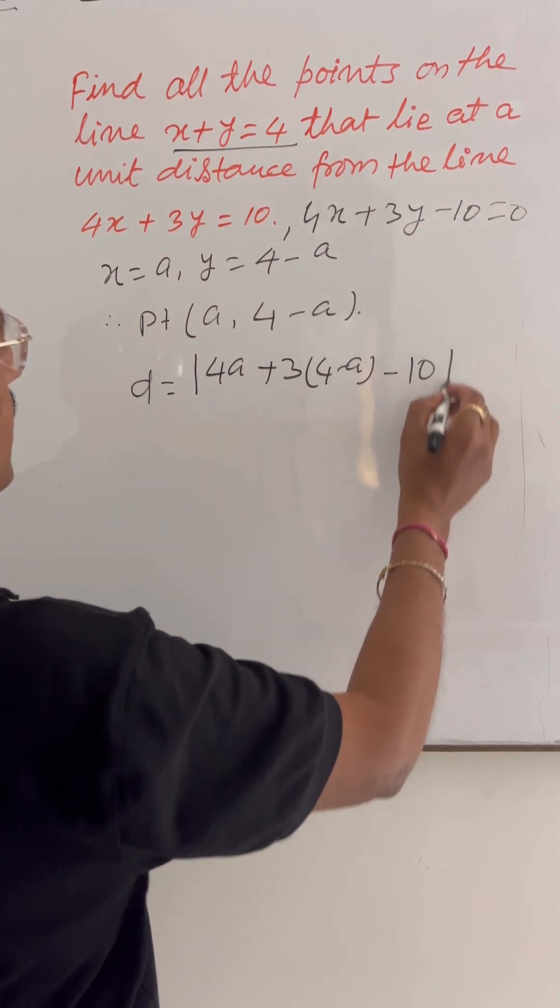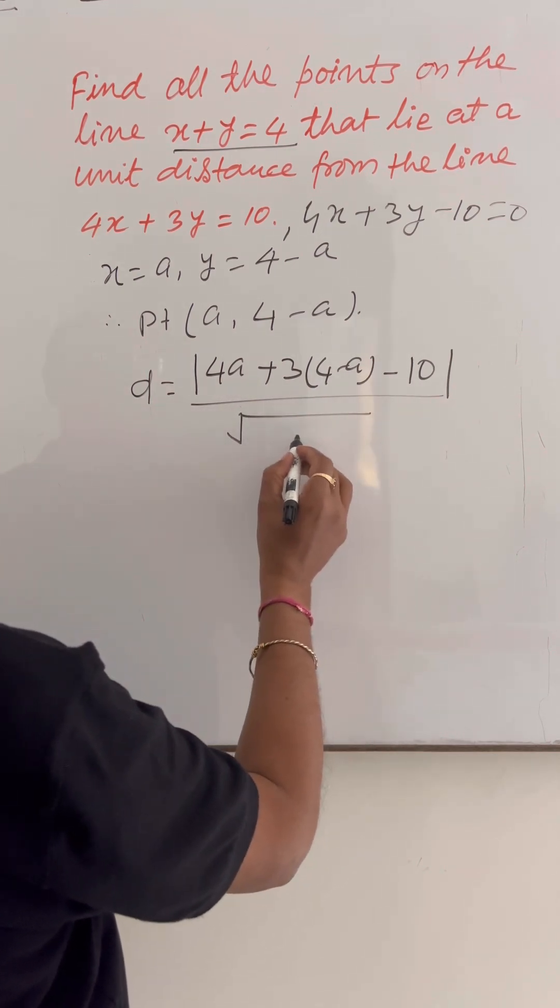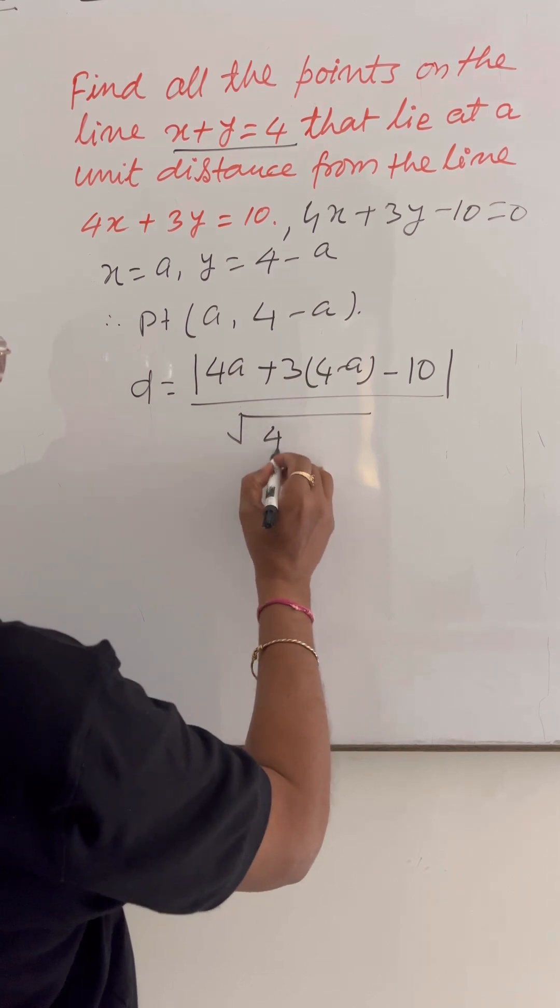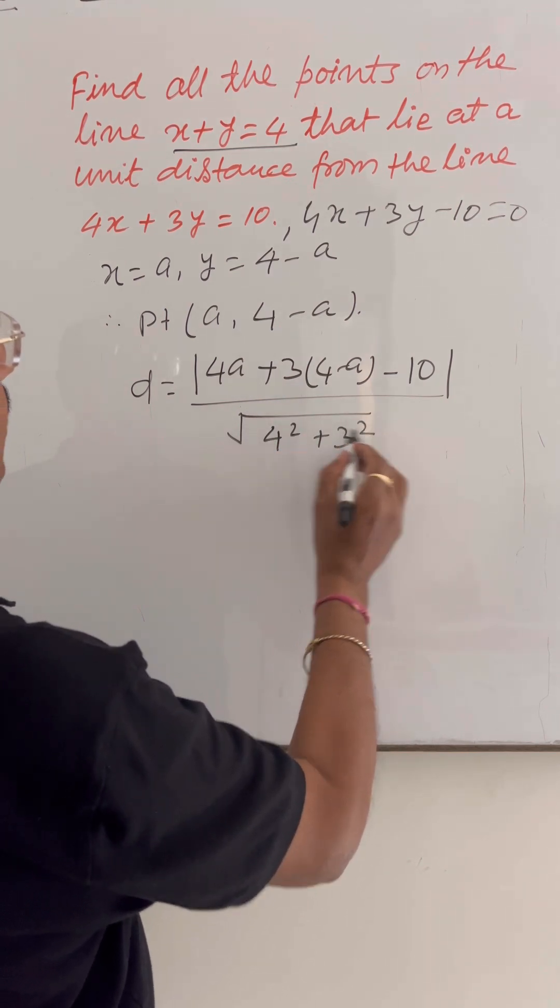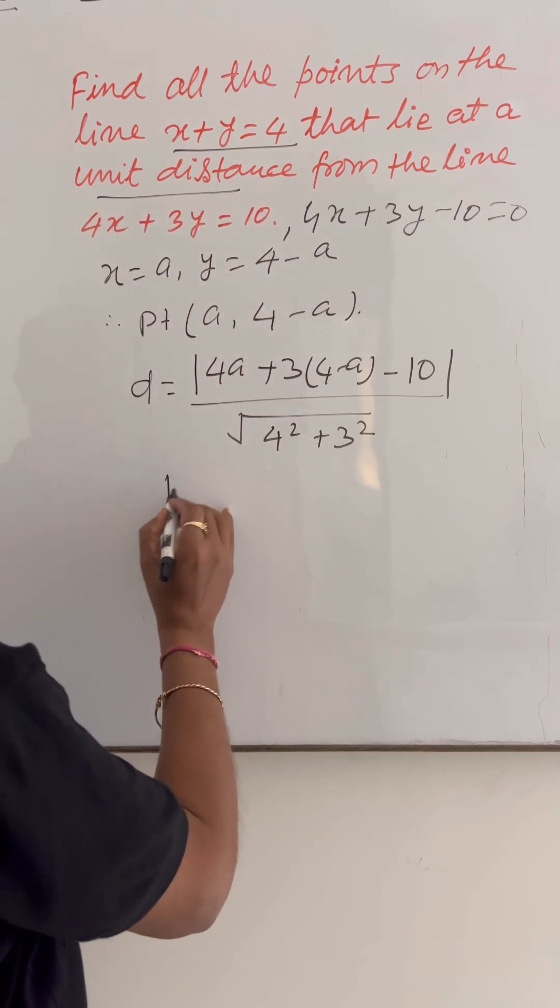So, we are writing here minus 10 upon root of a square plus b square, means 4 square plus 3 square. And here, given that this distance is unit distance. So, d is equal to 1.